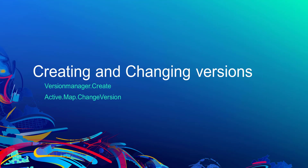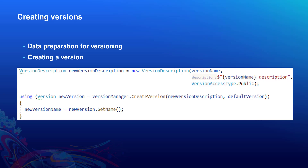Let's dive into details on creating and changing versions. To create versions, you need to prepare the dataset that supports versioning. You have to publish the feature service and enable the support for versioning, which I have done prior to this demo. To create the version, we'll use the version manager's createVersion method. This method takes a version description and default version as parameters.